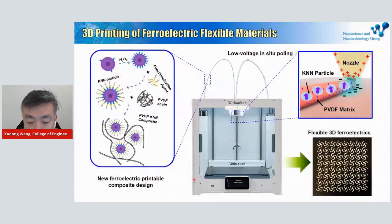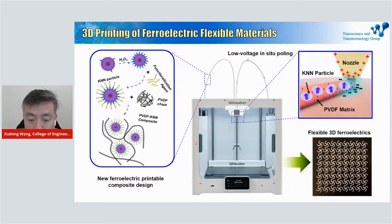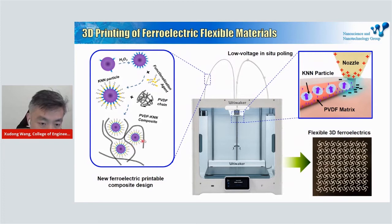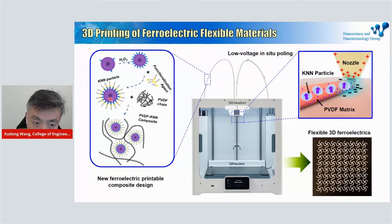Let me show a couple of specific examples of our research activities. Starting with 3D printing technology, we developed a new composite material with built-in ferroelectricity. Ferroelectricity is a property that produces spontaneous electric polarization. We created this new composite with a soft polymer matrix and many tiny nanoceramic particles embedded inside — these nanoparticles are called ferroelectric materials, and they have spontaneous electric polarization inside.